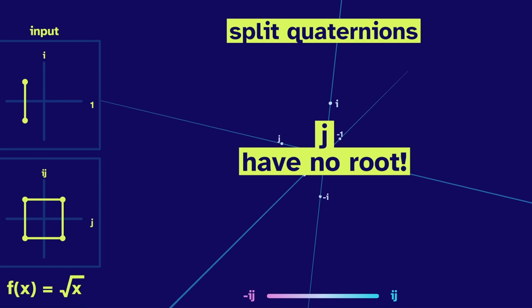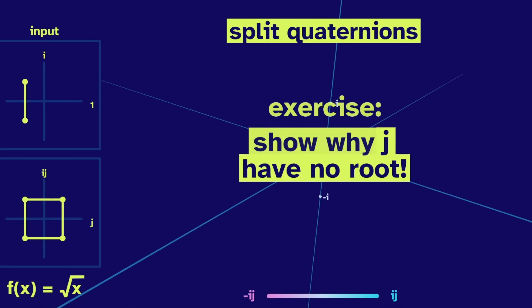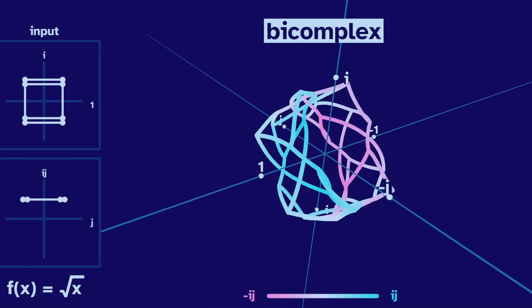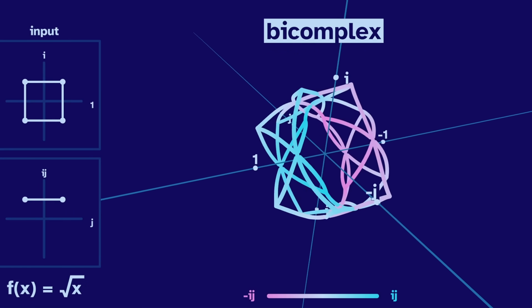Even j have no root. As an exercise, show why. So using the split quaternions didn't fix the root issue. But the bi-complex numbers do.